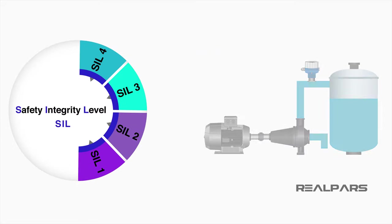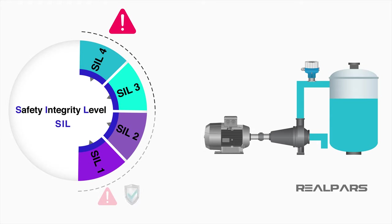Every alarm on a system is assigned a rating based upon its probability to occur and the consequence if it does. The higher the potential consequence, the higher the integrity rating of the safety system is required to be.